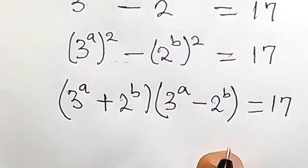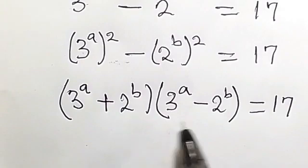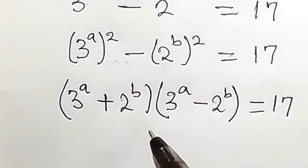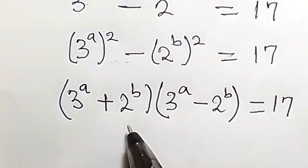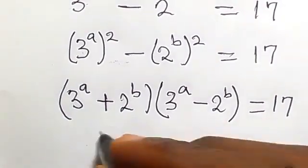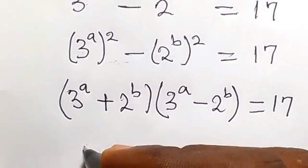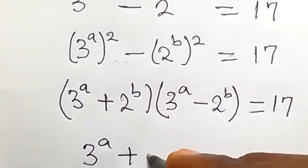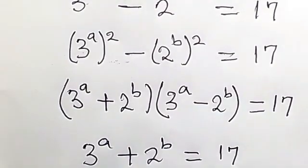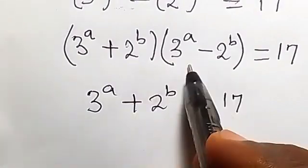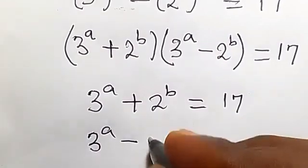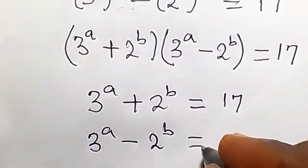We have the product of two numbers giving us 17, and 17 is of course a prime number. So the only factors are 17 and 1. We set 3 raised to power a plus 2 raised to power b equals to 17, and equating the second factor to 1: 3 raised to power a minus 2 raised to power b equals to 1.